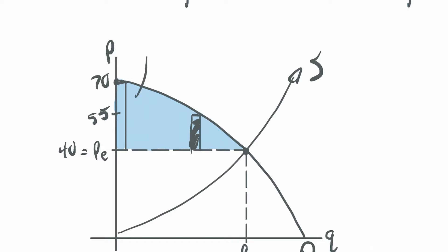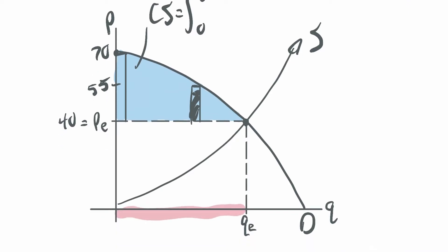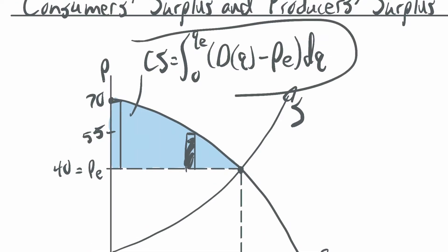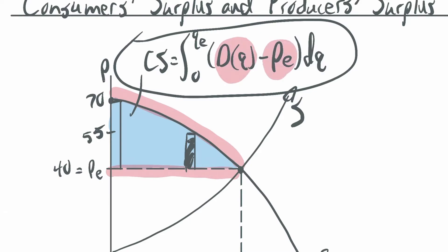So this whole region together is called the consumer surplus. It's always the area between the top and the bottom of the region. The consumer surplus is the integral from 0 to the equilibrium quantity of the demand curve minus the equilibrium price, dQ. You don't have to memorize it as a formula — you're just recognizing top of the region minus bottom of the region.